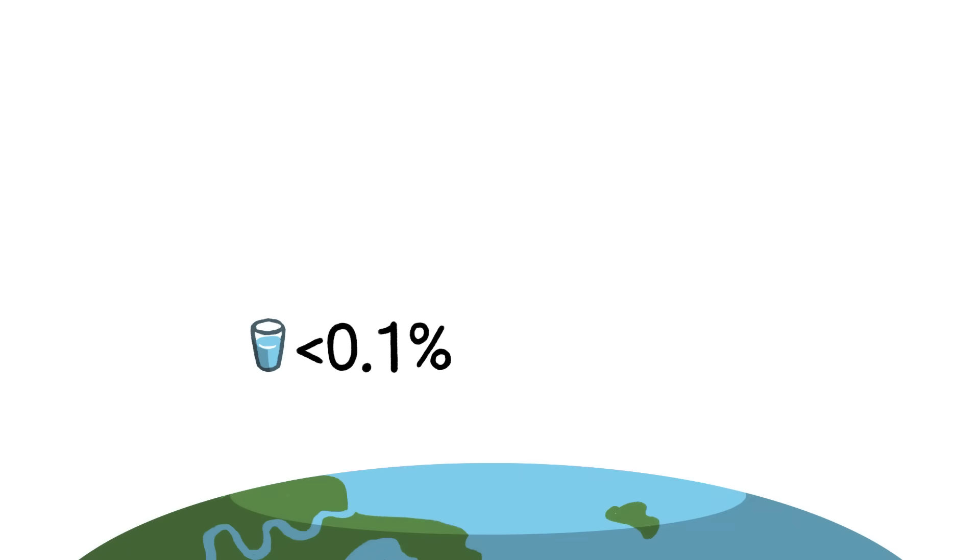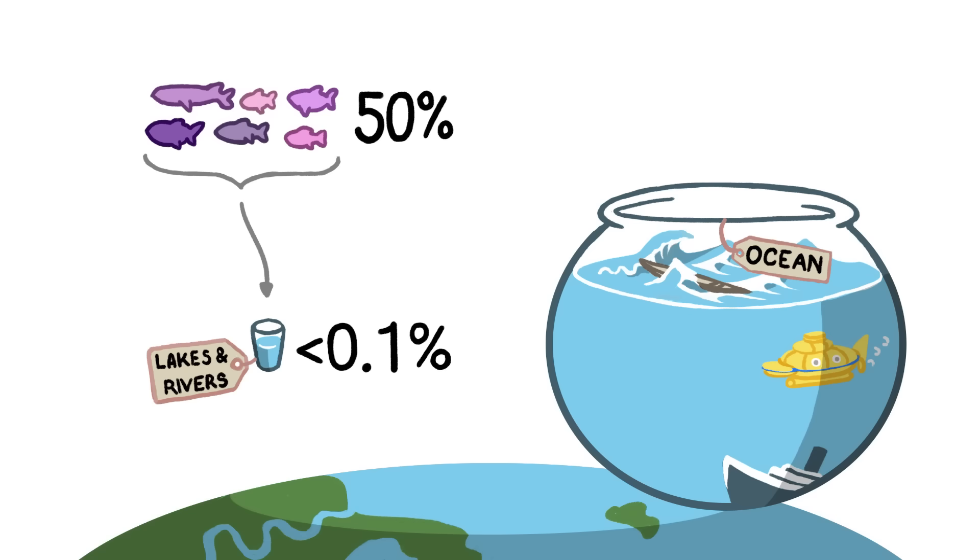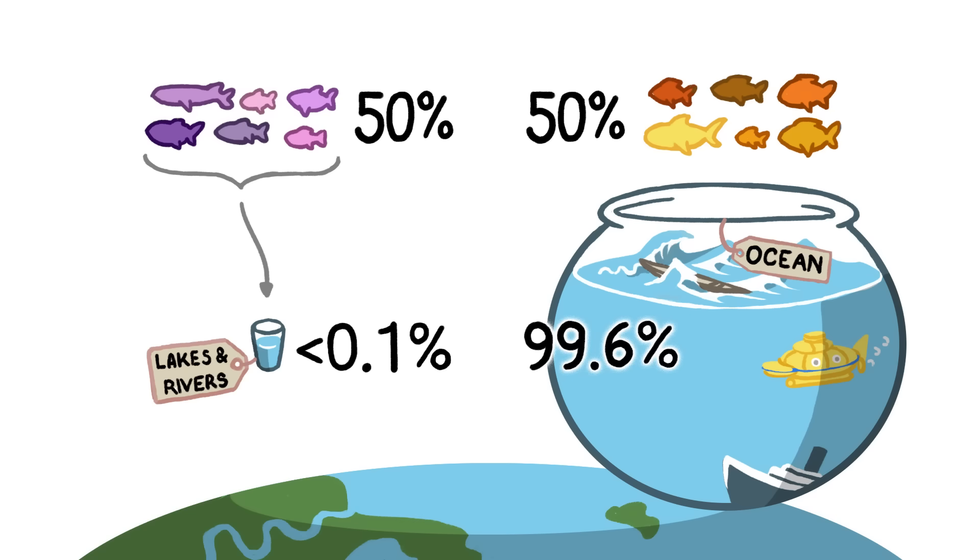Less than a tenth of 1% of the water on Earth is freshwater lakes and rivers, yet that tiny percentage contains about half of all the world's fish species. Ocean water, which accounts for a whopping 99.6% of Earth's water, contains the other half.